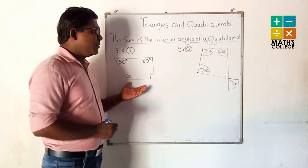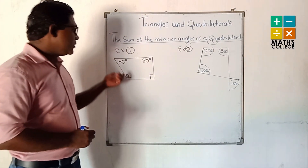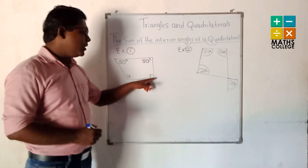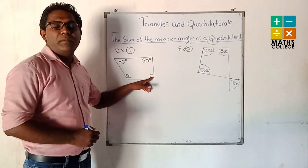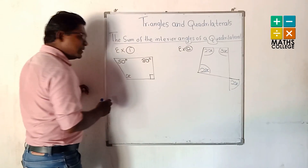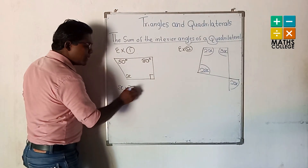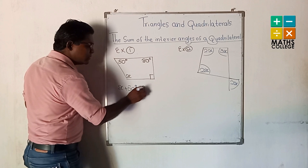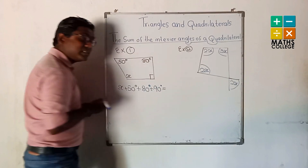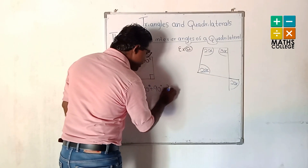Now we are going to solve problems on the sum of interior angles of quadrilaterals. In the first example, according to our theorem, we apply: x + 50 + 90 + [other angle] = 360.